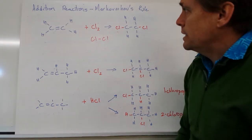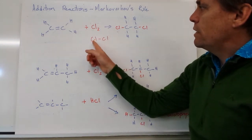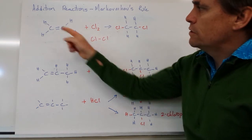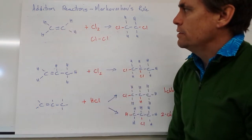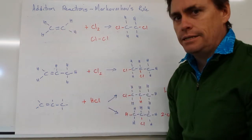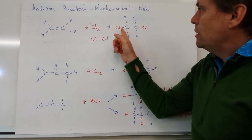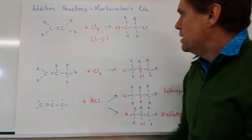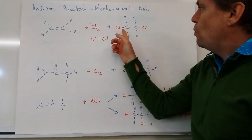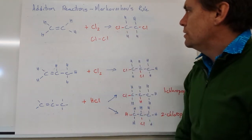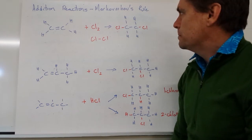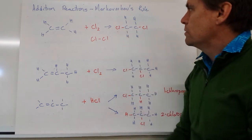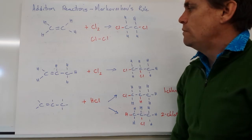In this case, our two chlorine atoms will come in over the top of the double bond, break it down into a single bond, and we're left with a chlorine on each of the carbon atoms. So we get 1,2-dichloroethane — a symmetrical molecule.